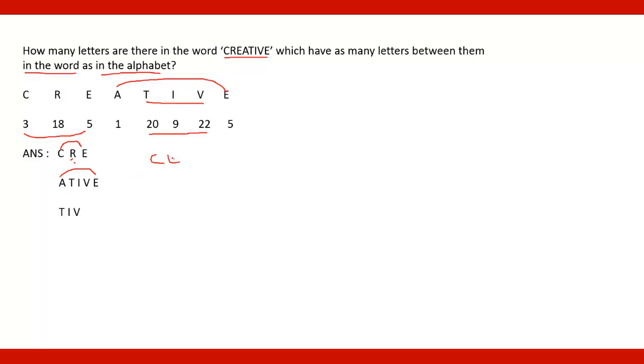So first pair is C and E. Another pair is A, V. And another pair T, V. So here it is T, V. T is 20, V is 22. Between 20 and 22 there is one number, and it means there is one alphabet.